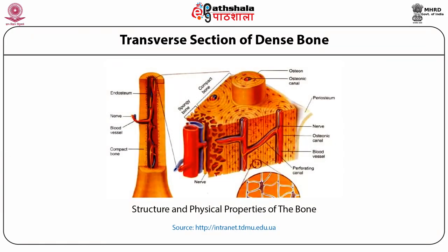When we see the diagram of the structure and physical properties of the bone, we see the endosteum, blood vessels, and compact bone. This shows how things are embedded in the bones, and illustrates the structure of compact bone and spongy bone — how they differ in structure — and shows the osteon and osteonic canal. In the center we can see the nerves in the osteonic canal, and also slightly bigger than the osteon is a blood vessel. This shows the structure and physical properties of the bones and the role of blood vessels, compact bone, and nerves, which all have different functions.